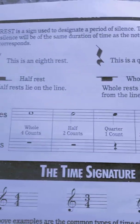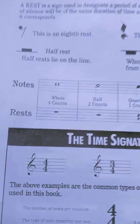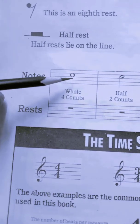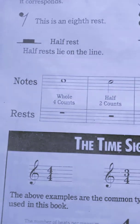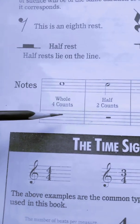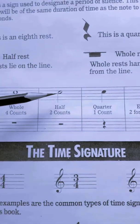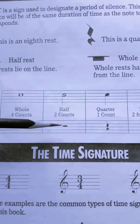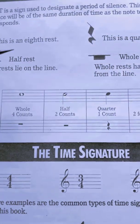Now that you know what the rests look like, let's understand what they imply. In the previous video we learned that a whole note is a note that lasts for four counts, so its equivalent rest will be silence for four counts. A half note lasts for two beats or two counts, and its equivalent rest will imply silence for two counts.